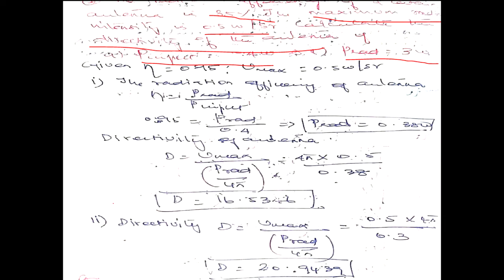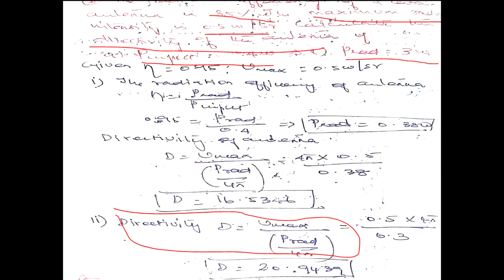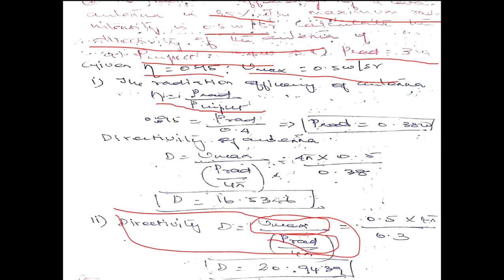The formula for directivity is: directivity equals U_max divided by (P_radiation divided by 4π). P_rad is the radiation power, and U_max is the maximum radiation intensity, which is given as 0.5 watt. The radiation resistance is also given, from which we can calculate the radiation power.